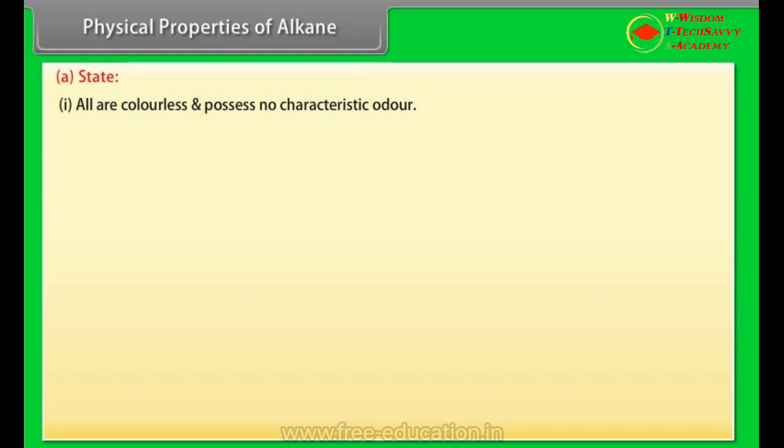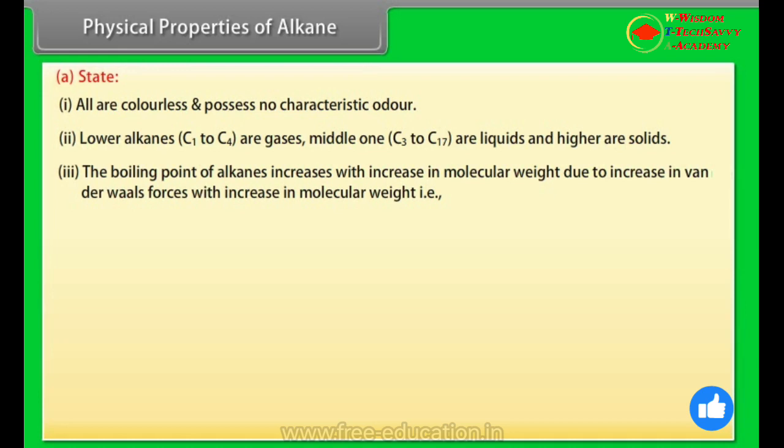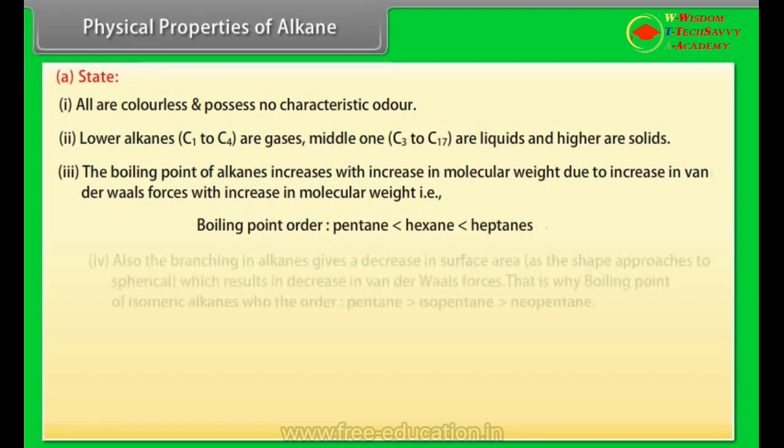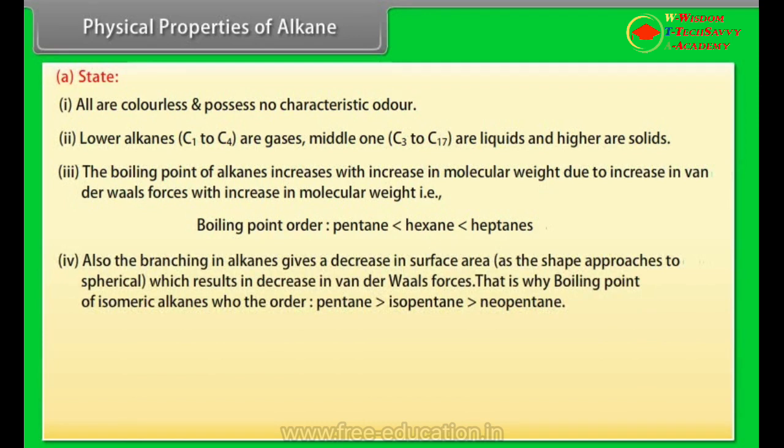Physical Properties of Alkanes. State: 1. All are colorless and possess no characteristic odor. 2. Lower alkanes, C1 to C4 are gases. Middle ones, C5 to C17 are liquids and higher are solids. 3. The boiling point of alkanes increases with increase in molecular weight due to increase in Van der Waals forces with increase in molecular weight, i.e., boiling point order: pentane is less than hexane is less than heptanes. 4. Also the branching in alkanes gives a decrease in surface area as the shape approaches to spherical which results in decrease in Van der Waals forces.